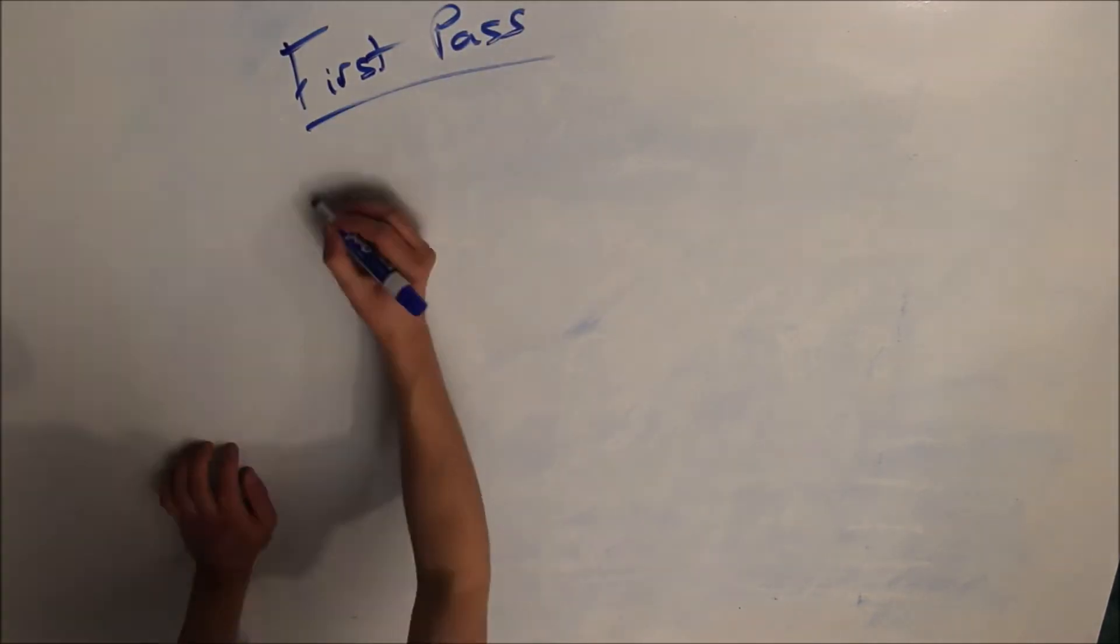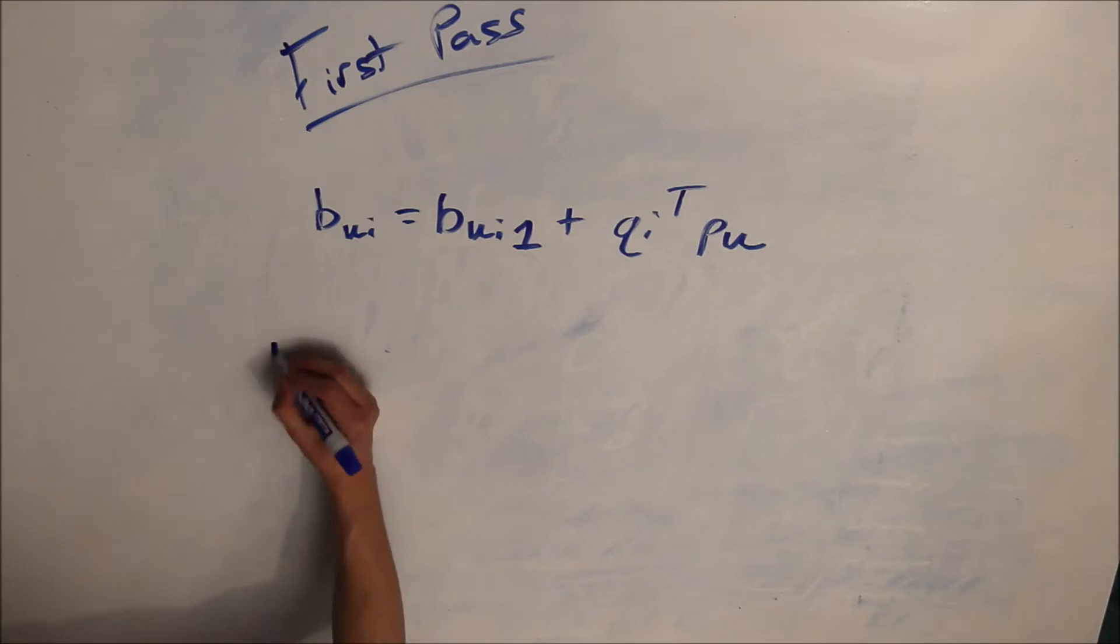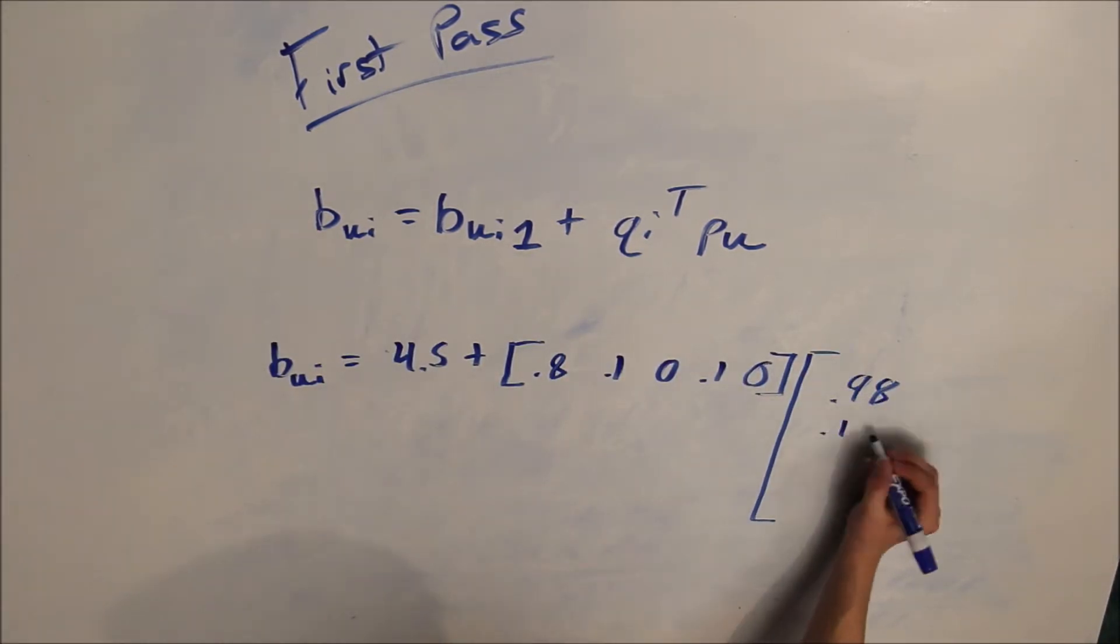So what did our first pass model come up with? Well, when we work it through, we sum the baseline model plus QI transpose times PU, or 4.5 plus 0.8, coming up with a rating of 5.3.